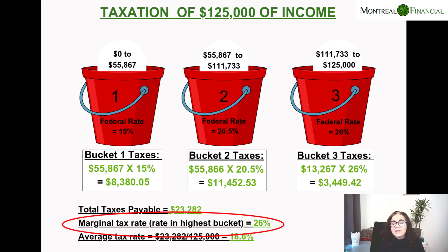Your marginal tax rate is 26%, which means every additional dollar you earn will be taxed at 26%. So if you made $125,001, that one extra dollar would be taxed at 26% — not the whole $125,001, but just that additional dollar. This will continue until you reach the next tax bracket. This concept helps you understand how much tax you'll pay on each additional dollar of income.